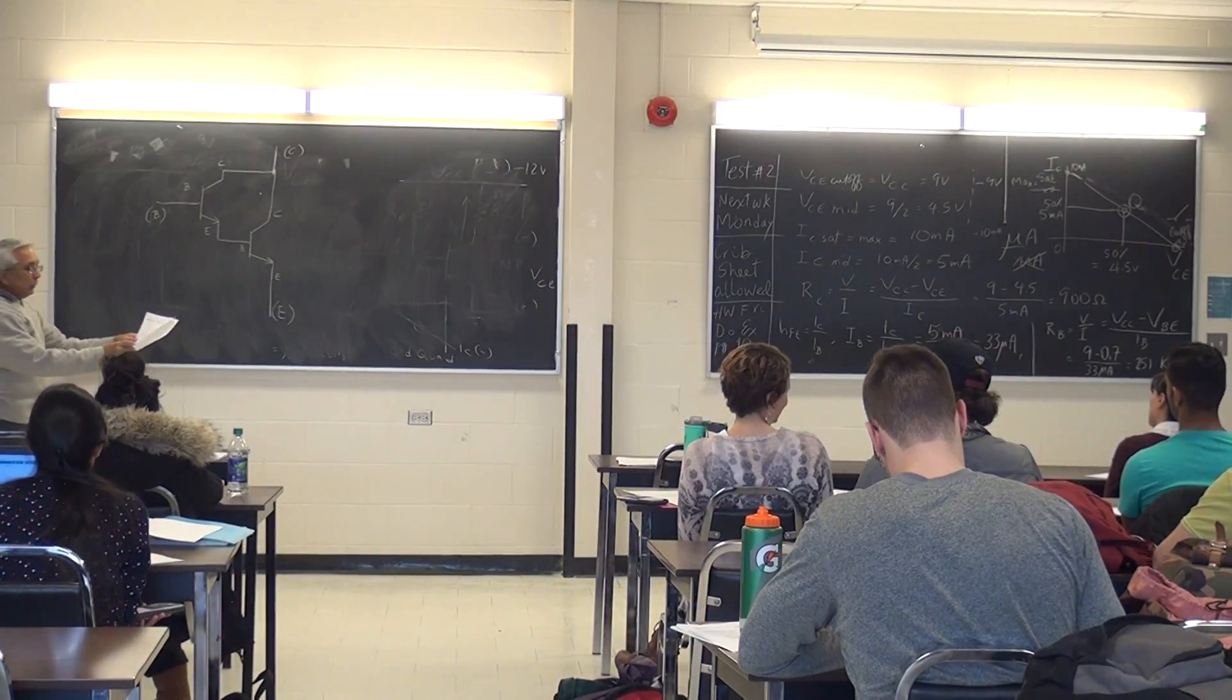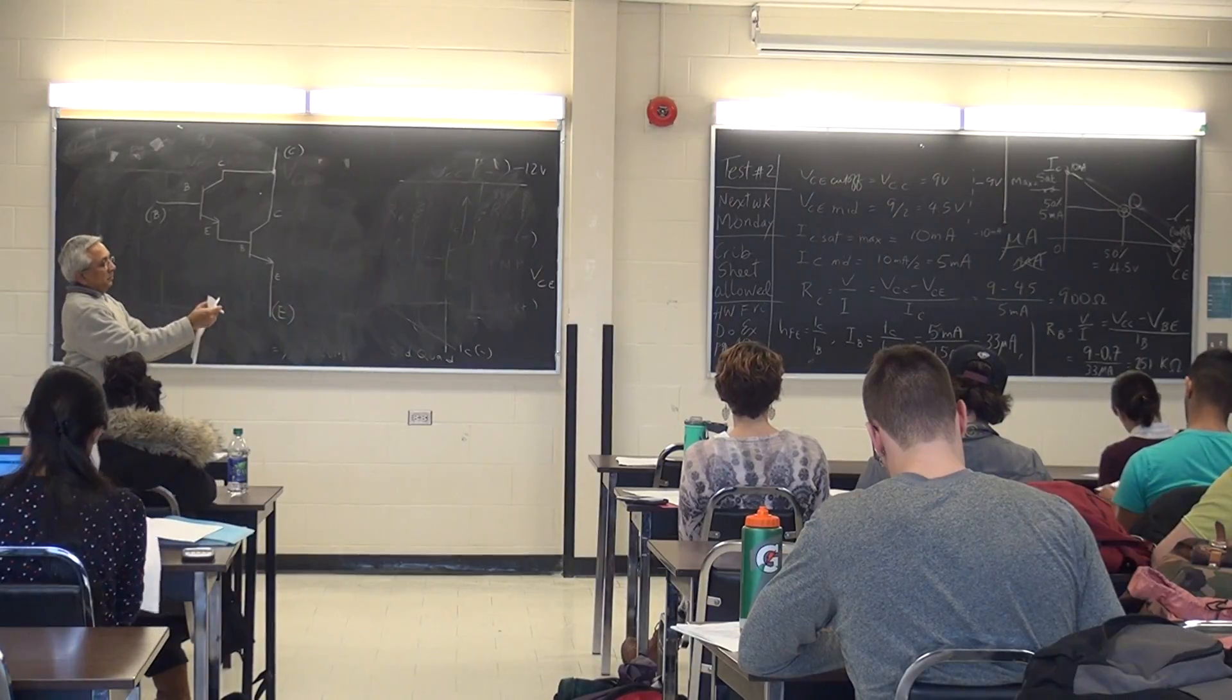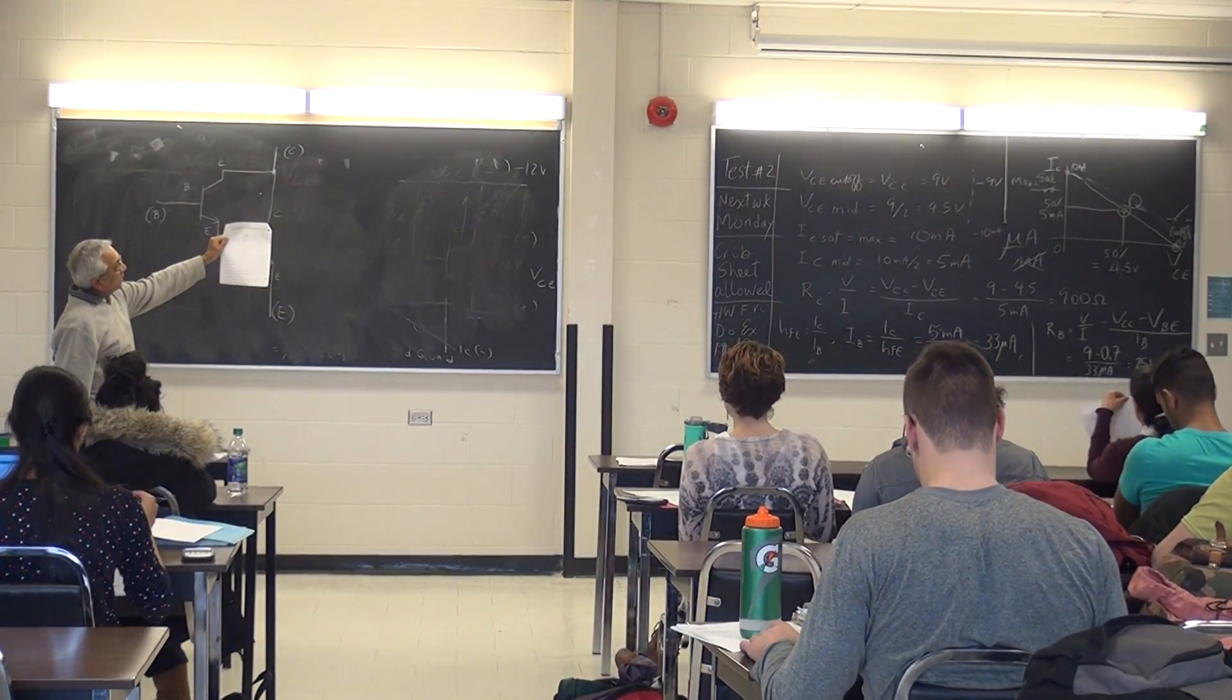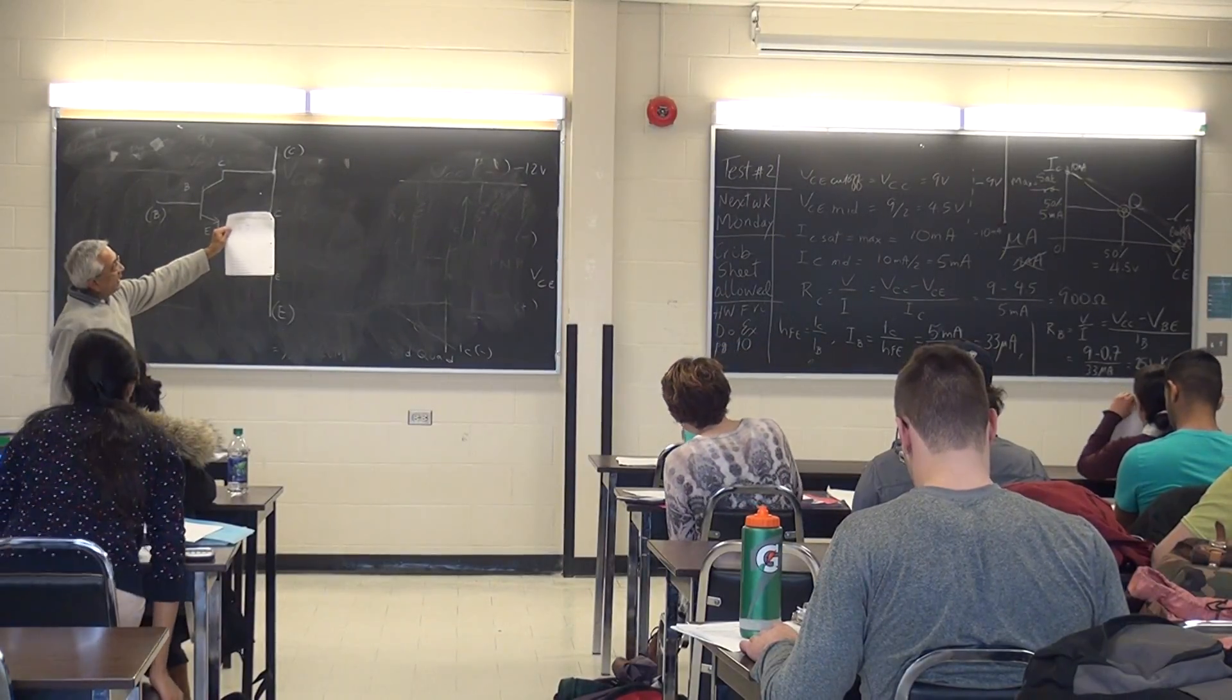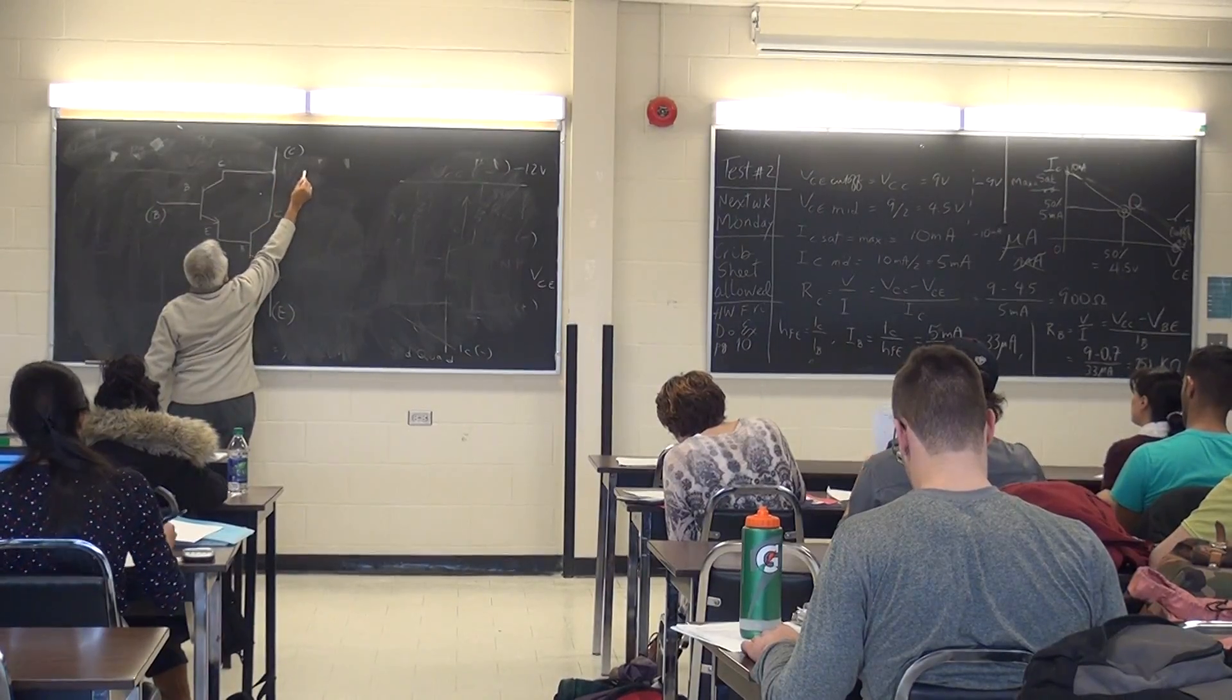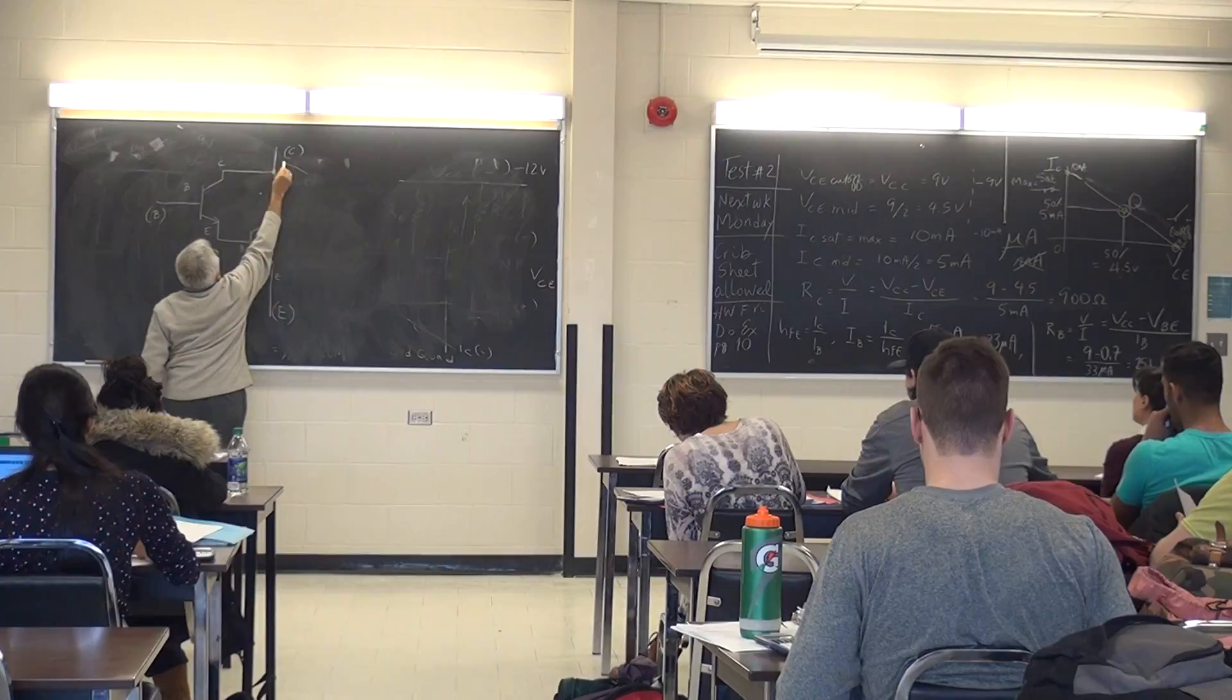So what I want you to do is go to page two and draw a circle around the two transistors like this. Draw a circle. It doesn't have to be a perfect circle. Just do this.